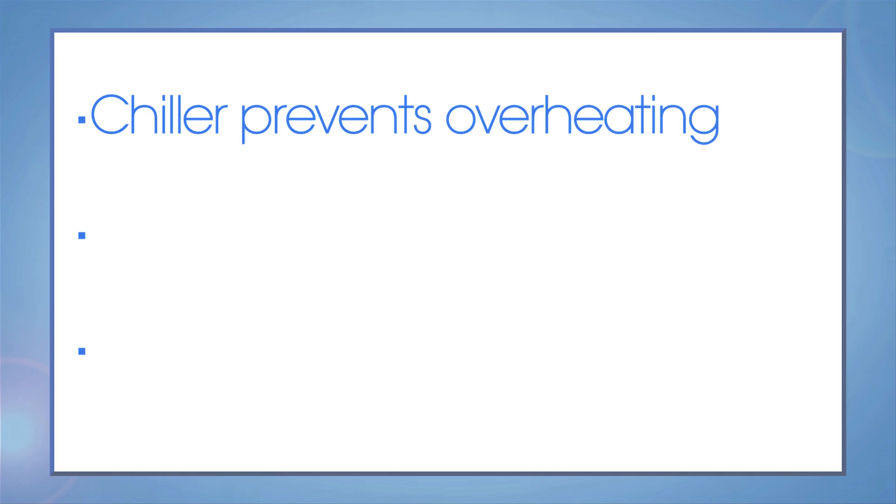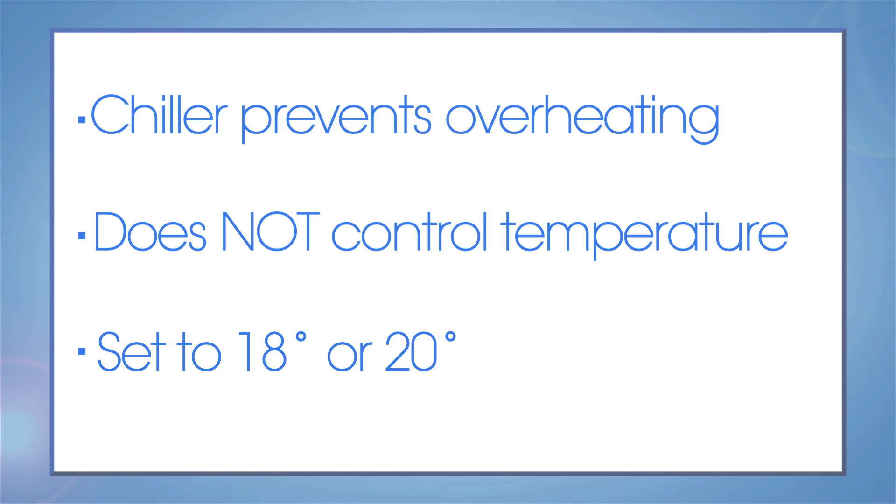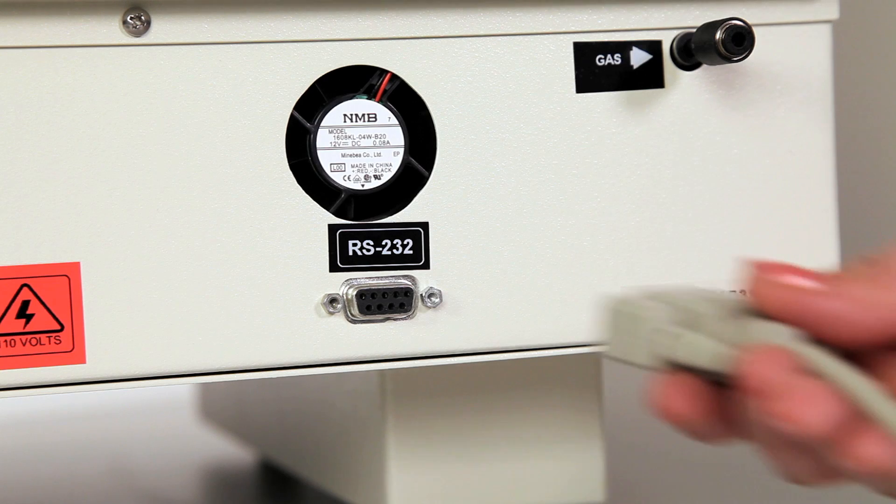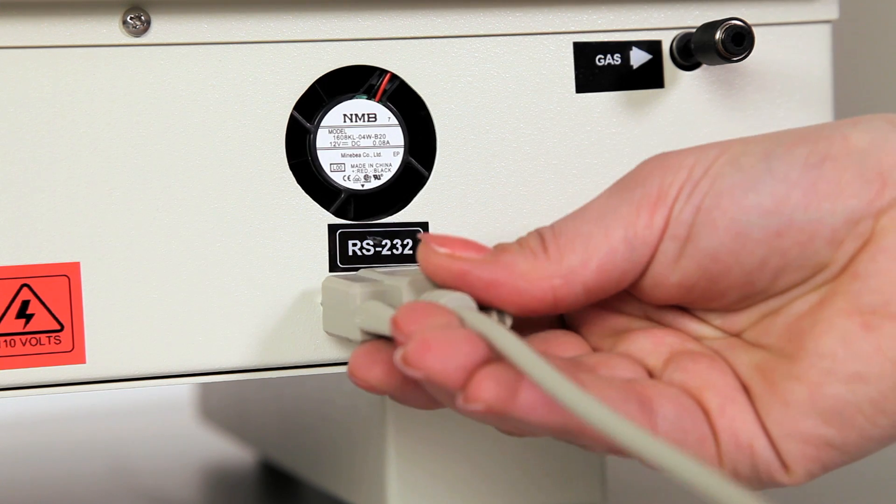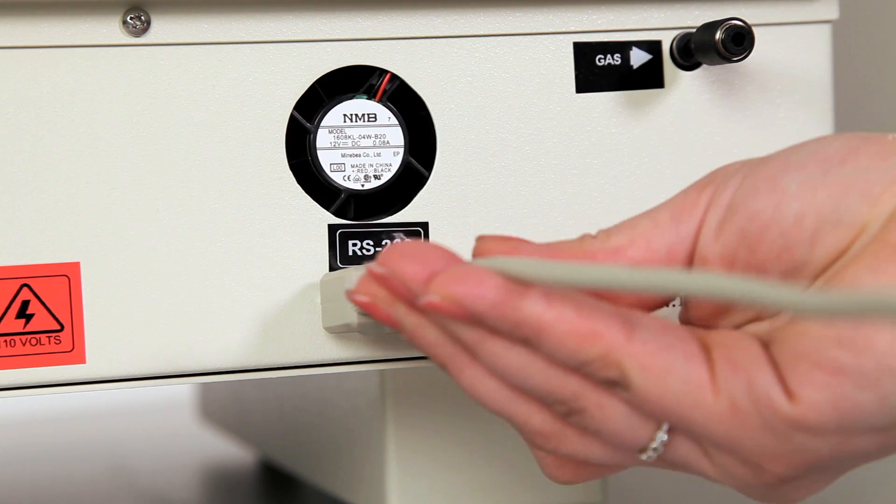The chiller is used to keep the system from overheating and is not used in temperature control, so you can set it to 18 or 20 degrees C. Then we connect the RS232 to our instrument and the computer.